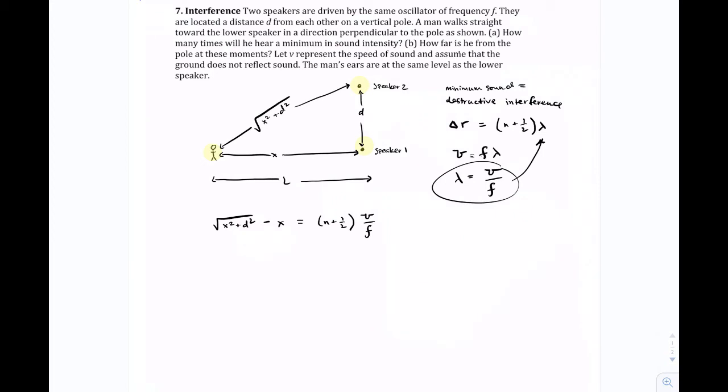and we're going to look for where is he with respect to the pole, or basically speaker one, at the times when he hears minimum. So we're looking for the distance X, but as you can see, it's not that easy to solve X, but there's some algebra we can do to make it a little bit easier. So let's move stuff around.